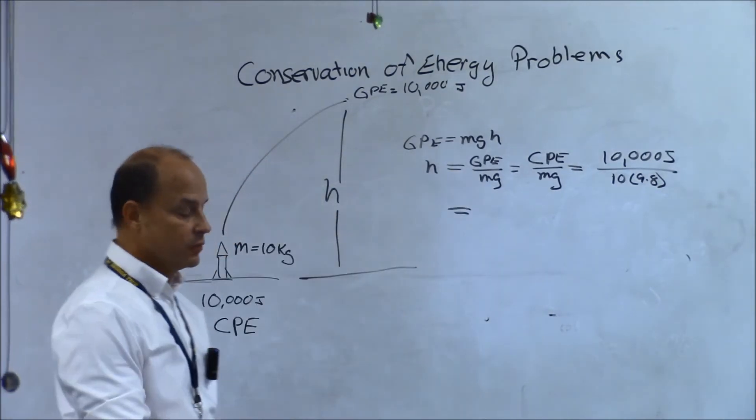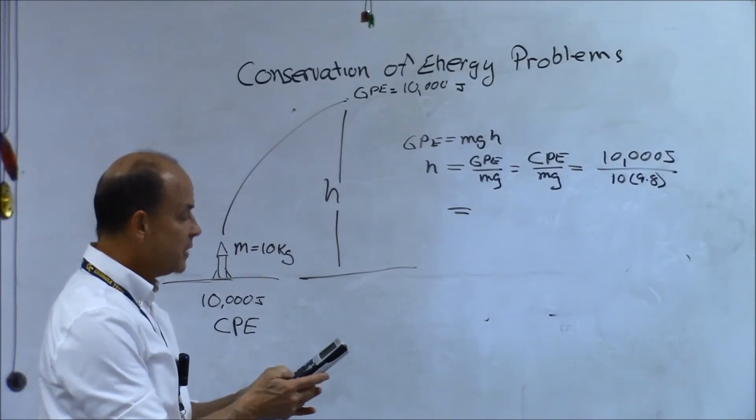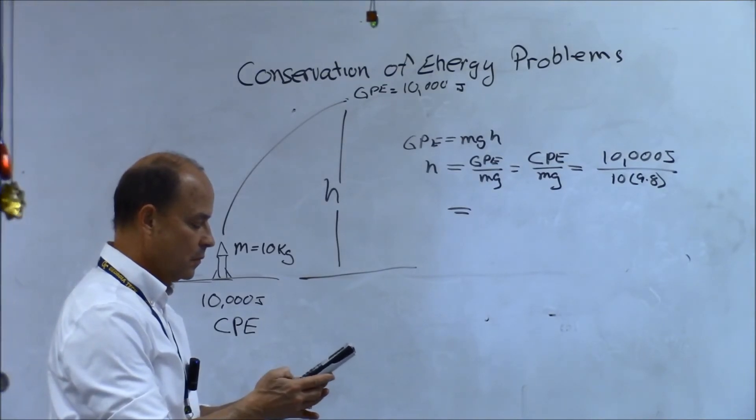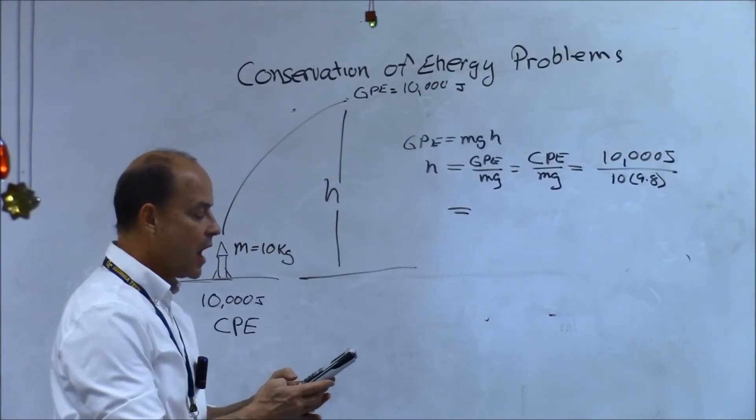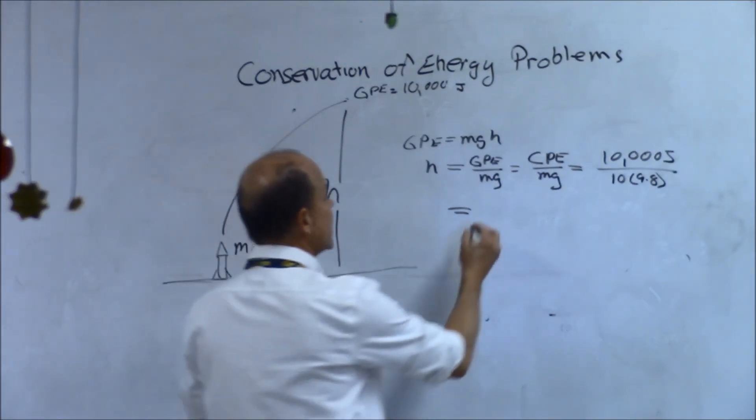Well, yeah, because mass is included with your GPE. So if I take 10,000 divided by the quantity of 10 times 9.8, then the rocket is going to go 102 meters high.